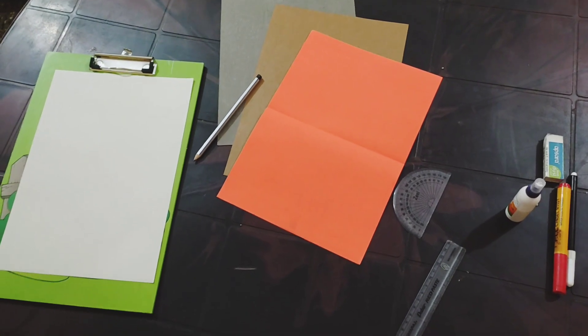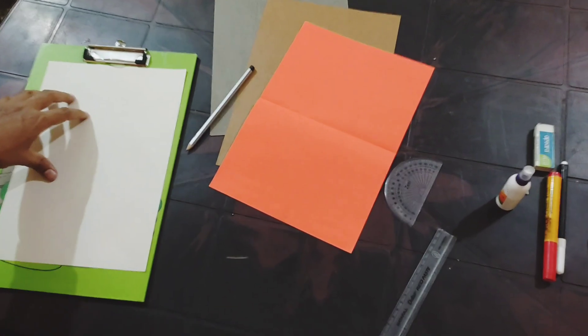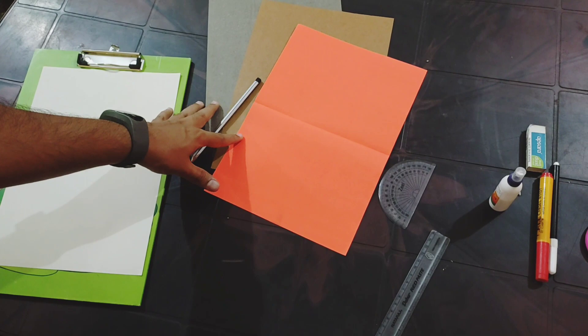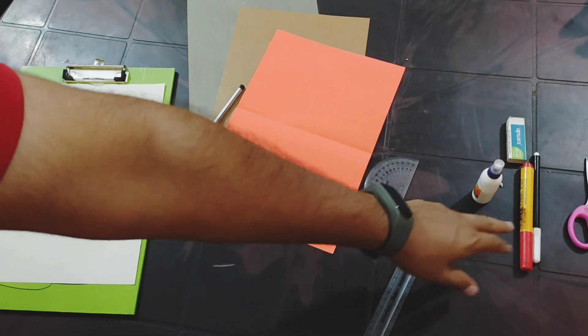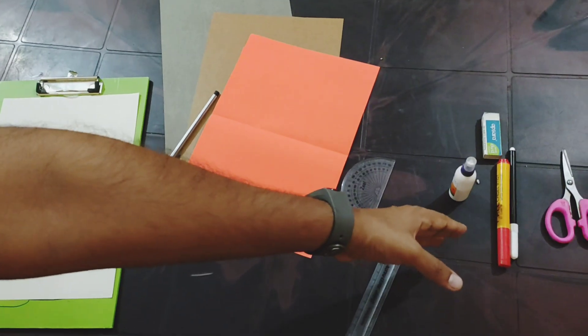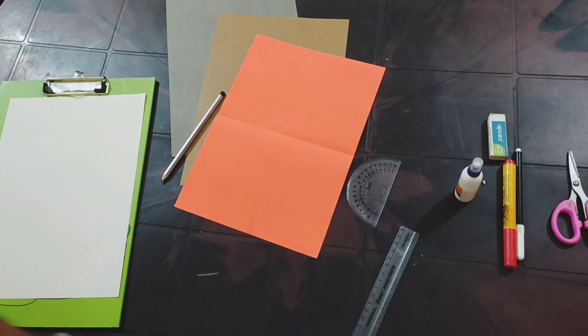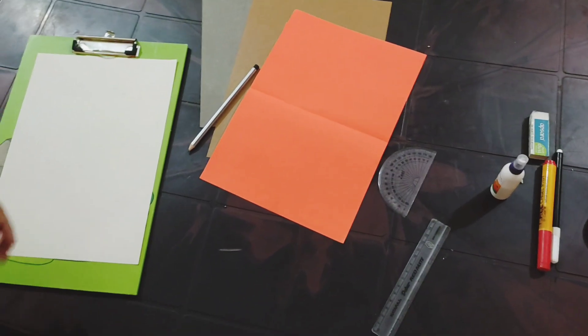To do this activity, we need a few things. First is a white paper, color papers from the stationery shop, a protractor, scale, gum, a few color pencils or sketch pens, and also a scissor.